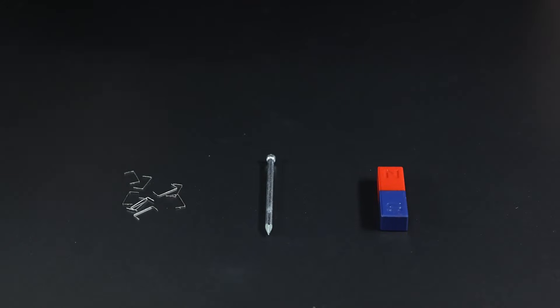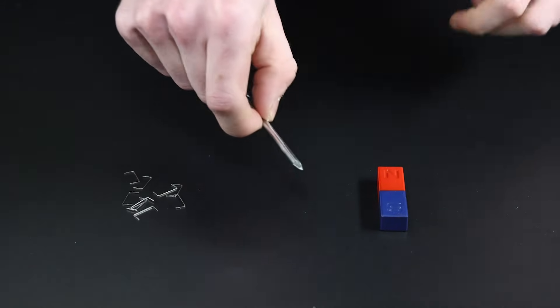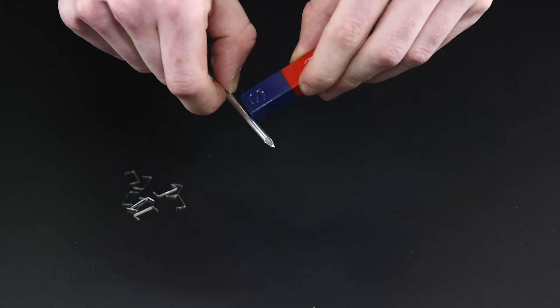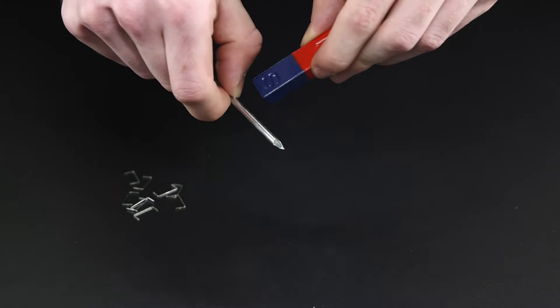We can use the bar magnet to magnetise the metal nail by stroking one of the magnet poles along the nail in the same direction, like this.